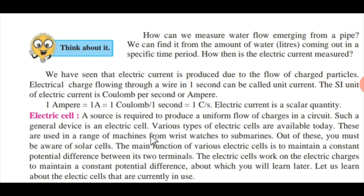The next point is electric cell. An electric cell is a device capable of generating electrical energy from chemical energy. In these cells, there is a chemical reaction and because of that chemical reaction, it generates electricity. A source is required to produce a uniform flow of charges in a circuit — such a device is an electric cell. Various types of electrical cells are available today, used in a range of machines from wristwatches to submarines.